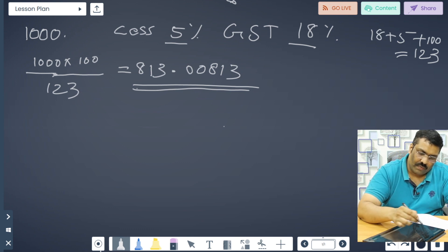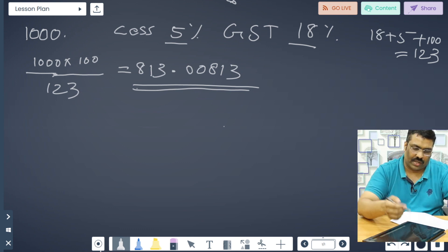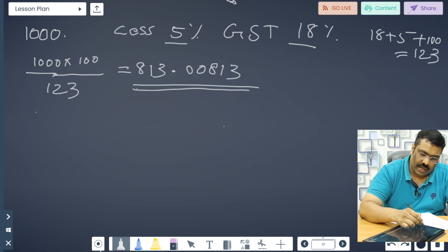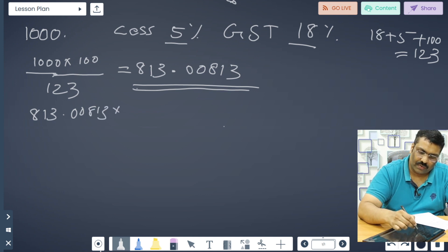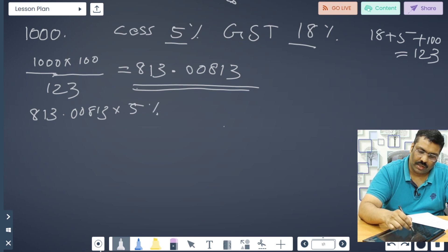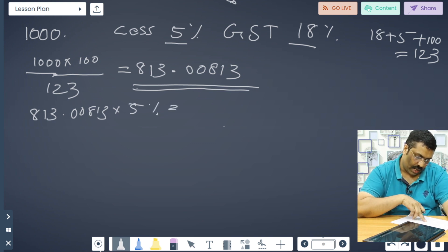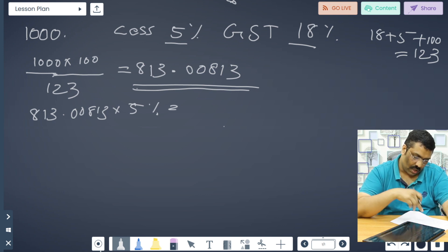813.00813 into this 5 percentage. How much? 5 percentage. It will be 40 rupees, 0.65040.